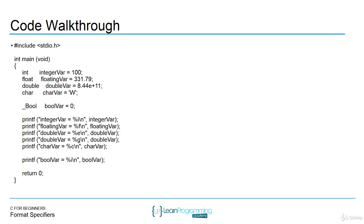Here's an example where we're creating some variables of different types: an integer variable, a float variable, a double variable, and a character variable. We're assigning all these different data values to them, and then we want to display these variables' values. In these printf examples, after the % symbol there are different letters: %i, %f, %e, %g, and %c. Those letters identify data types.